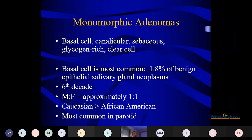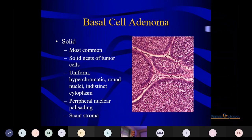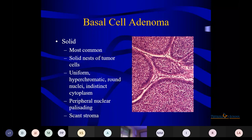Basal cell adenoma is the most common monomorphic adenoma — 1.8% of benign epithelial tumors. Commonly seen in the 6th decade, more or less equal sex distribution, and the most common site is the parotid. Basal cell adenoma has different patterns — solid, trabecular, tubular, and membranous. When you see solid morphology with peripheral palisading, it may bring ameloblastoma or BCC to mind, even though the site is different.